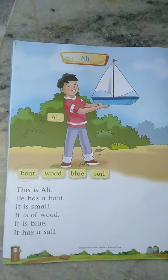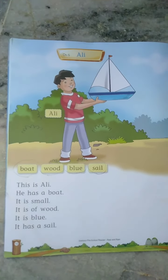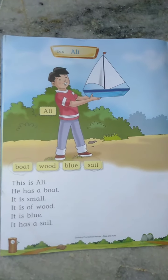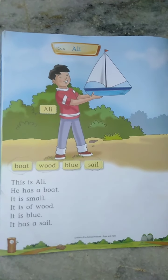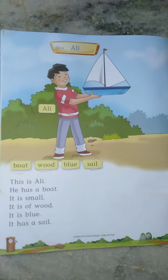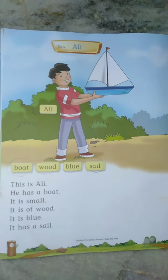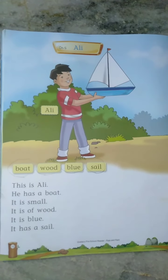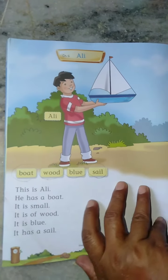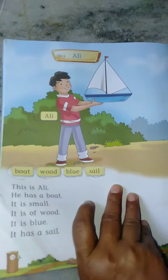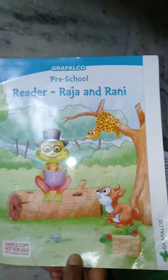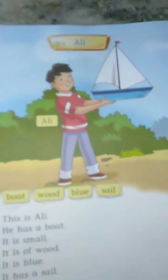Good morning students. Myself Vijay Lakshmi from Vivekananda Modern Academy. Today we are going to read Chapter 5 Ali. This is a book of English readers Raja and Rani, and this is Chapter 5 Ali.